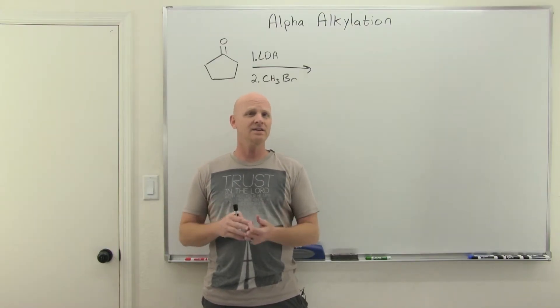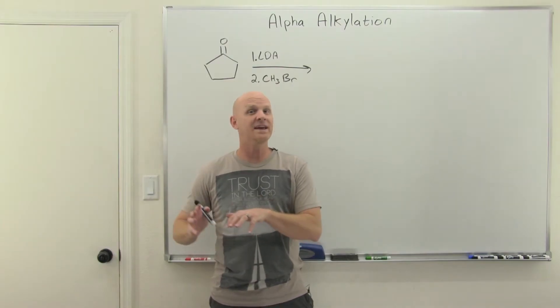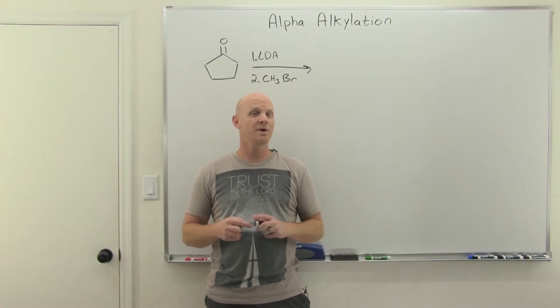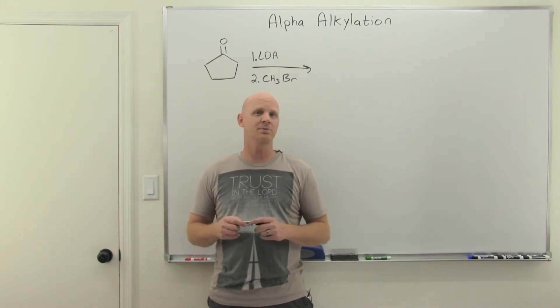Instead of using an enolate, we actually convert our ketone or aldehyde to an enamine, and that acts as the nucleophile instead. And those form under much milder conditions, as we learned a couple chapters back.